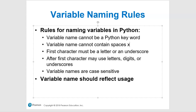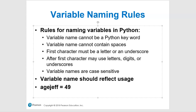Variable names cannot contain spaces. If you want multiple words, use an underscore instead of a space. For example, instead of 'age jeff' with a space, you would write 'age_jeff' with an underscore. Putting a space in the middle and then an equals sign will give you an error.